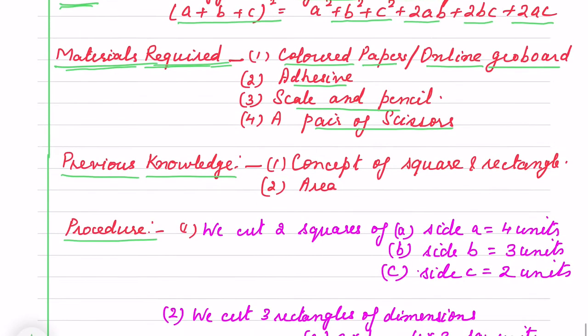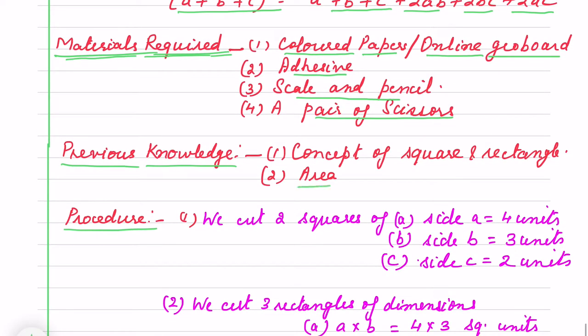What is the previous knowledge you have for this? You have knowledge of area of square and rectangle. So what we do? We cut two squares. You take different color paper or online geoboard. You have a different color facility. We take side a=4 units, b=3 and c=2 units.